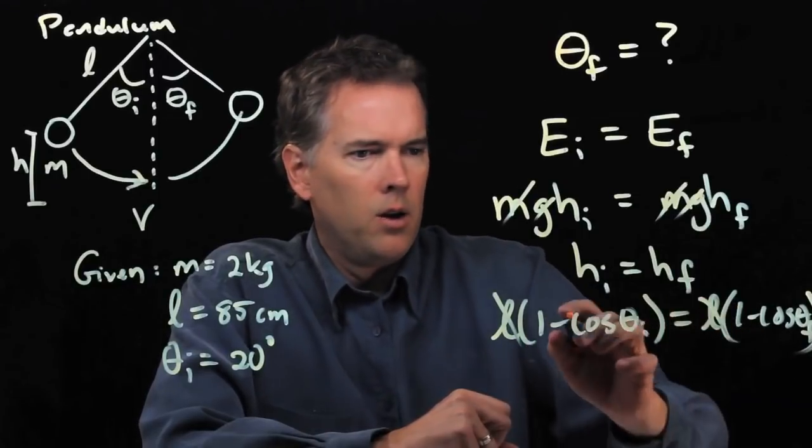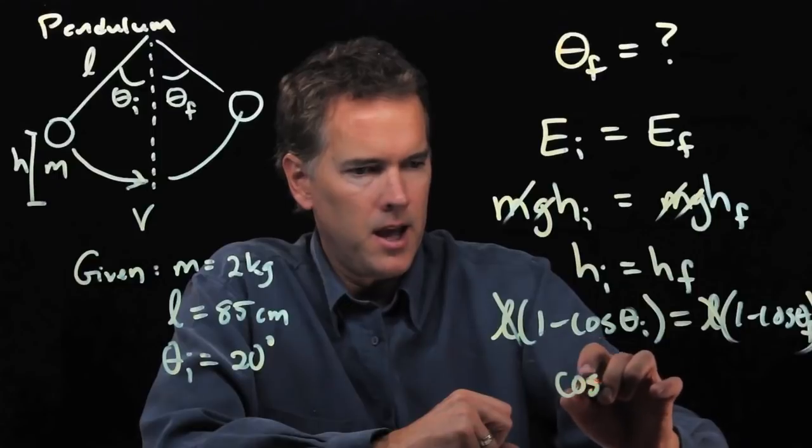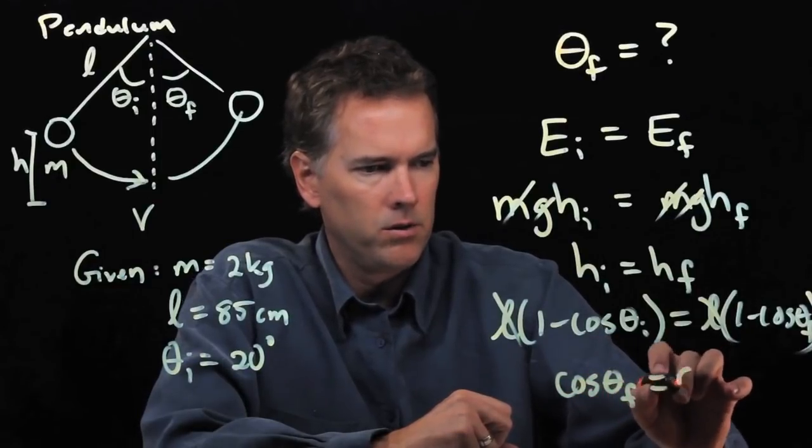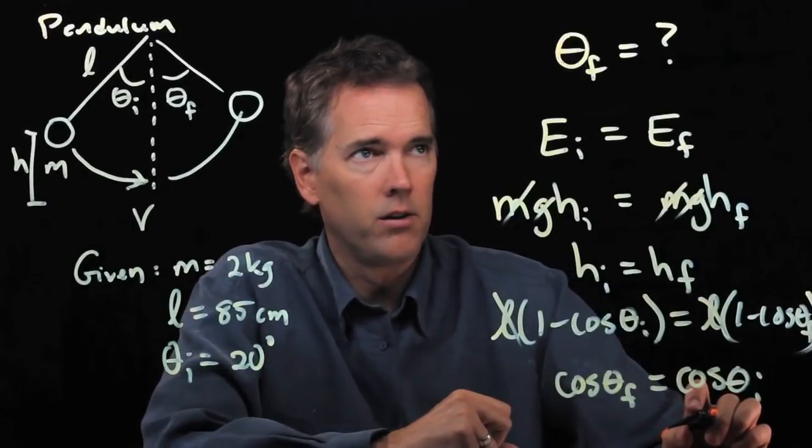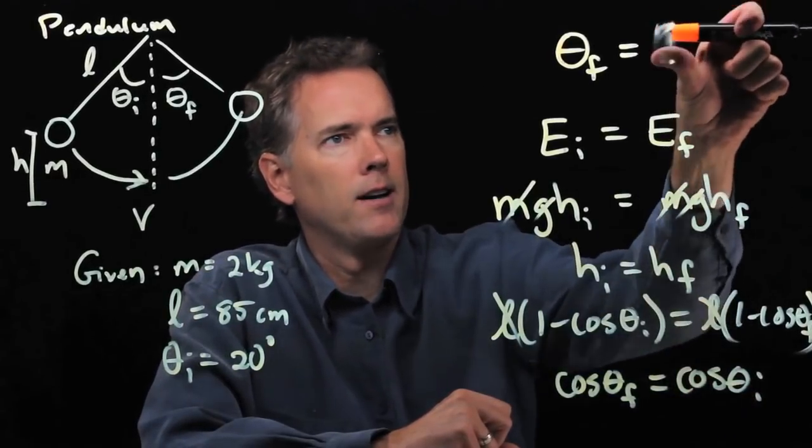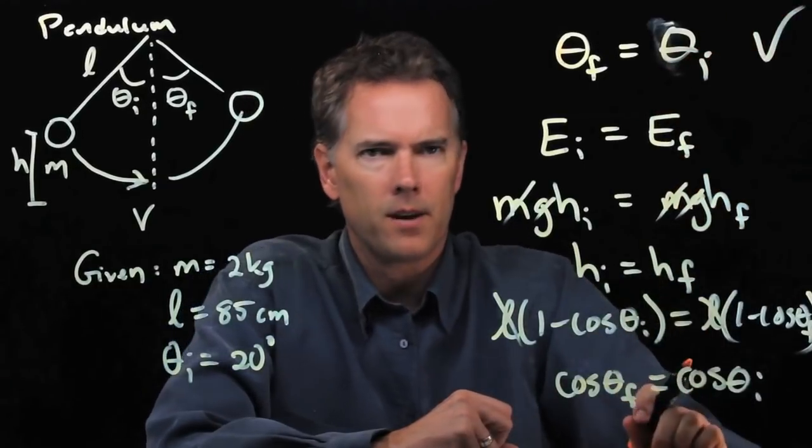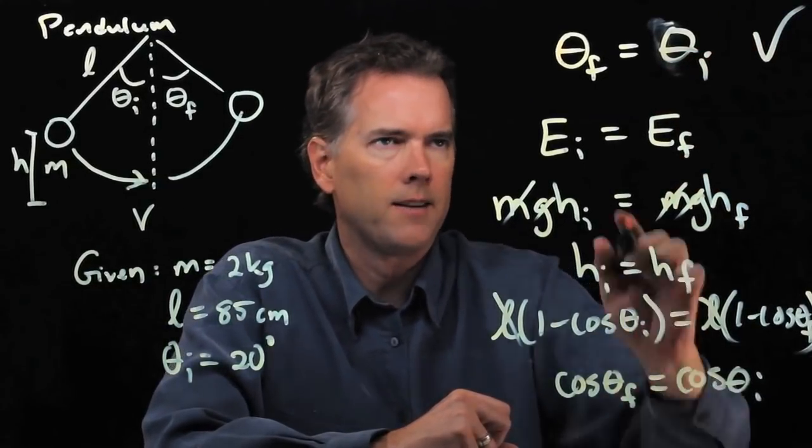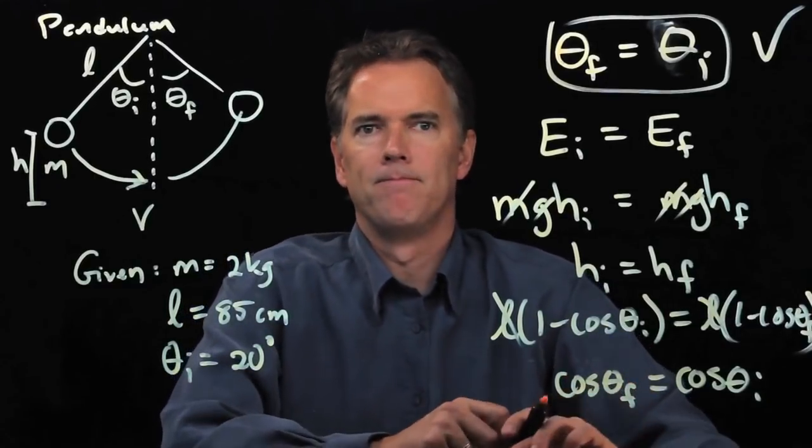the l's cancel out. We can simplify this and write cosine theta f equals cosine theta i. The only way that happens is if theta f, in fact, equals theta i. So conservation does, in fact, tell us that those angles have to be equal.